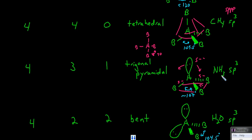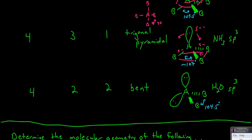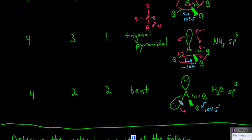A good example of this is ammonia, and again it's SP3 hybridized because there are four things around the central atom. Finally, what if we have two bonded atoms around the central atom and two lone pairs? Having two significantly repelling lone pairs of electrons, the bonded atoms will be even closer together than in the previous case, about 104.5 degrees.